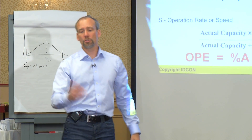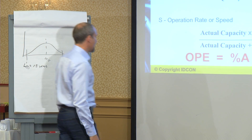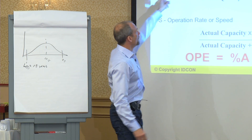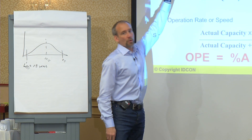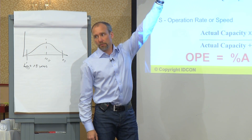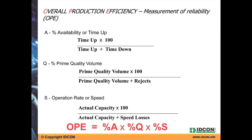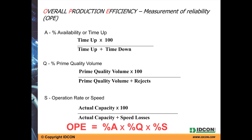All you do is take your complete theoretical uptime, take away your lost time, take away your lost quality, and take away your lost operation speed — because sometimes you run at reduced speed. Those are all the losses you can have, really. You can classify some subsets of these, of course.